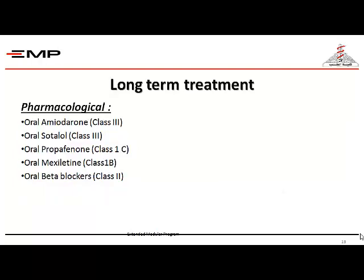After managing the patient in the ER in the acute setting, the patient then transfers to requiring long-term care. Options include pharmacological treatment — the same medications as before such as oral amiodarone and other oral antiarrhythmics.